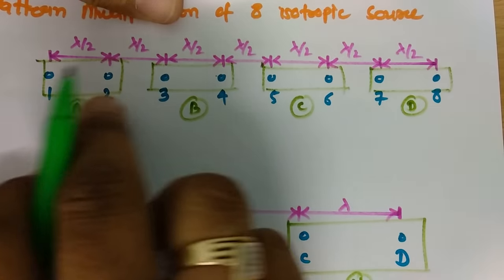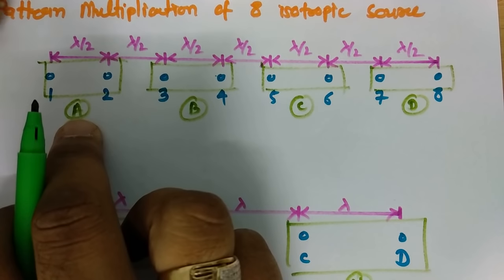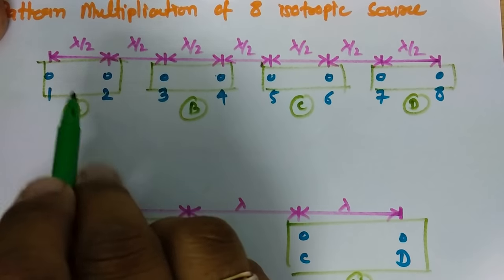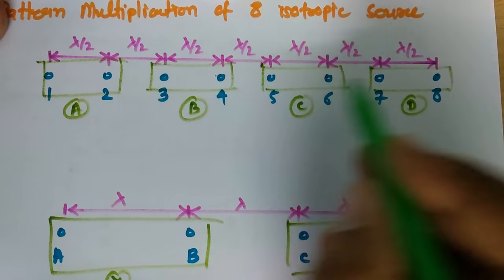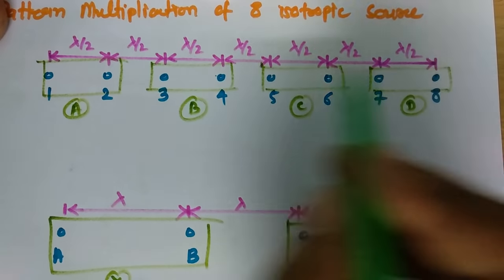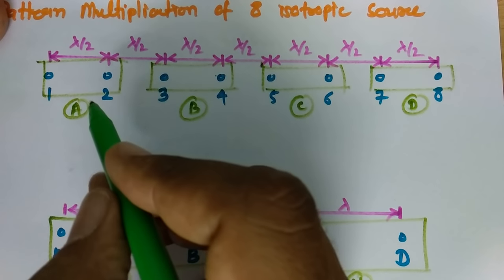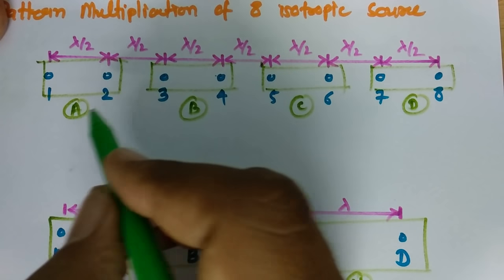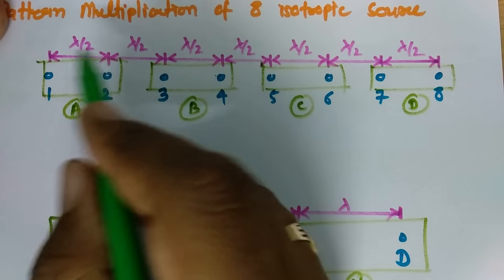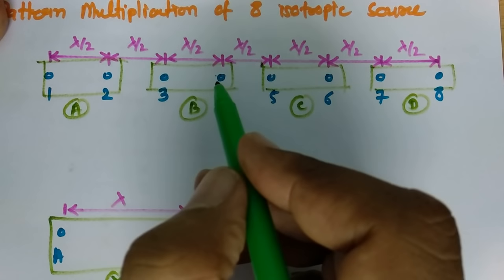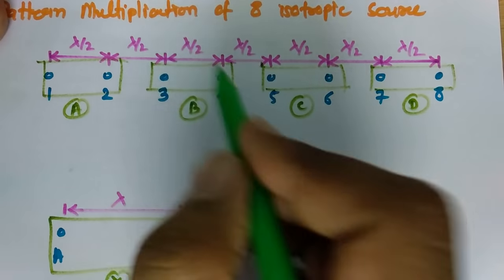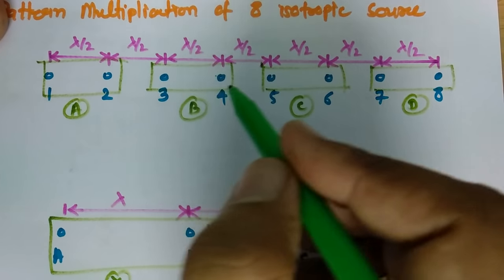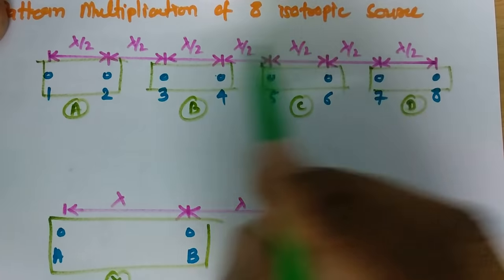First of all, consider a group of two elements and make an equivalent element. So 1, 2, 3, 4, 5, 6, 7, 8 — in that, 1 and 2 are considered as element A. So pattern of A is the group pattern of 1 and 2. Likewise, pattern of B equals group pattern of 3 and 4, and so on.